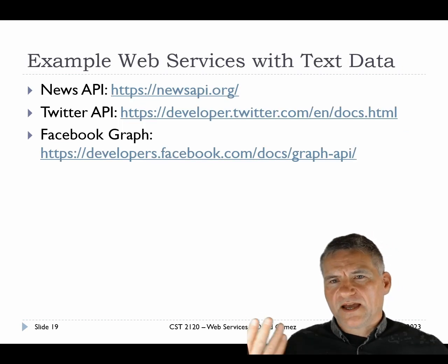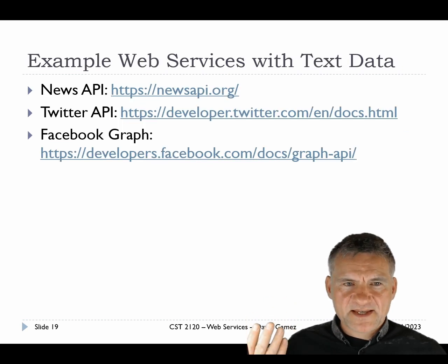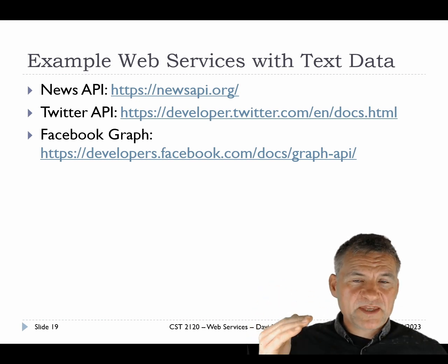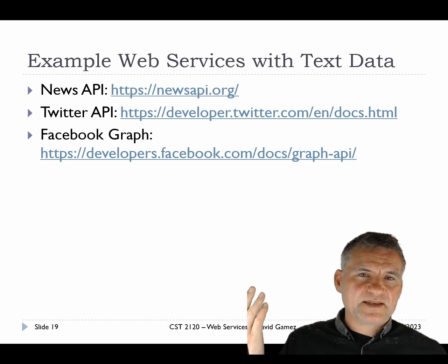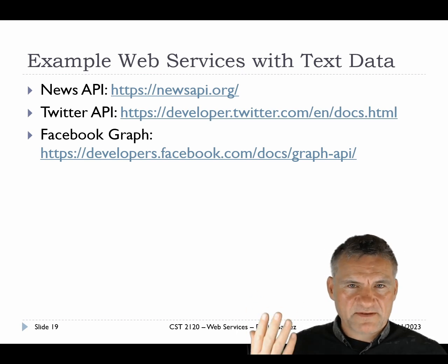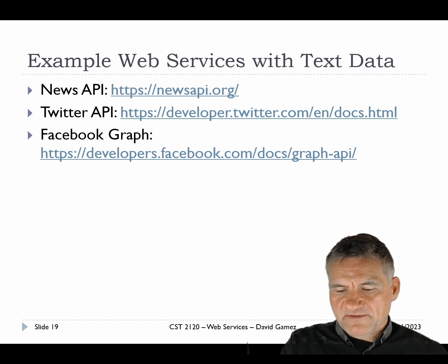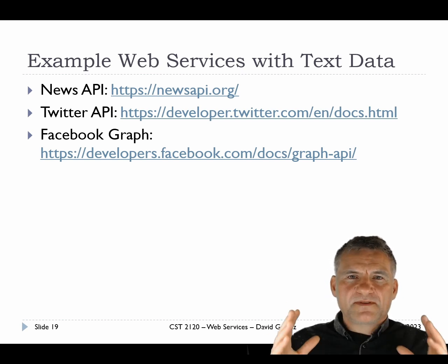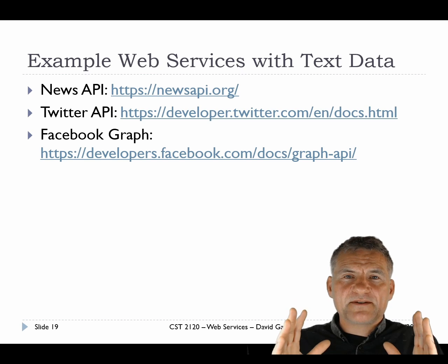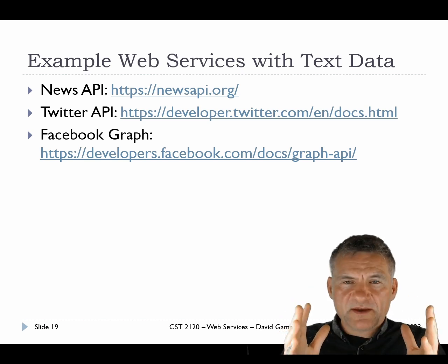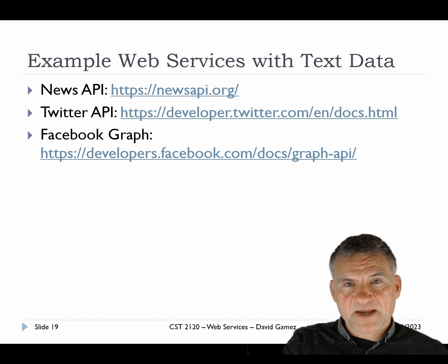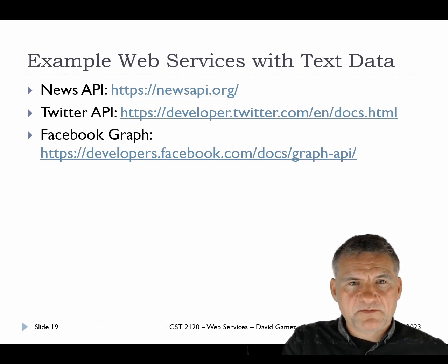There are also web services providing text data, like the News API, what used to be the Twitter API — now probably called X — and Facebook Graph, though I'm not even sure that still exists. The point is there are lots and lots of different web services provided by third parties that you can ping to get data and put it into your page or use however you want. There's a directory of web APIs worth a look, though it's sometimes out of date.